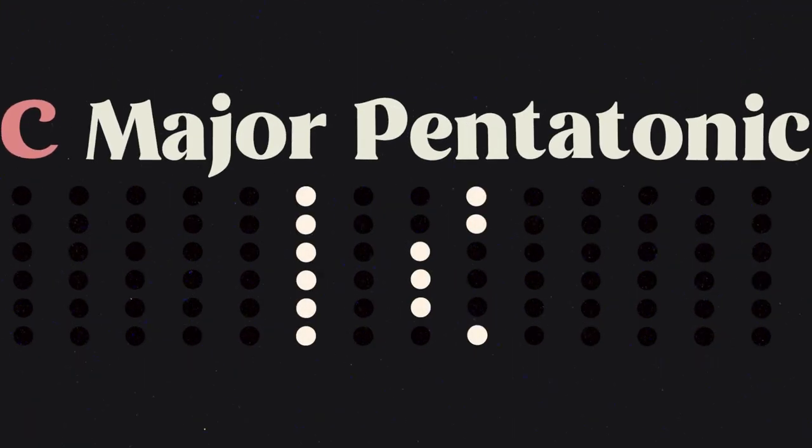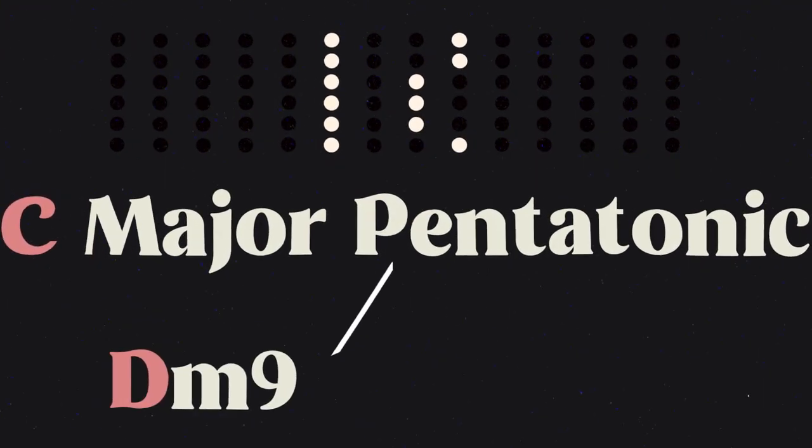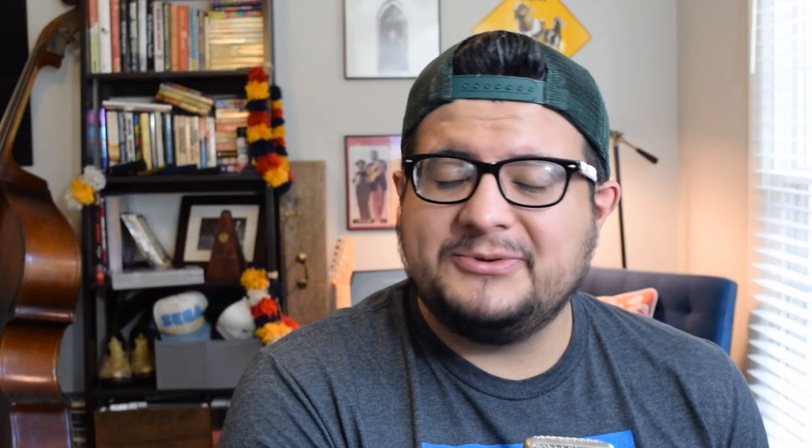Tony Rice is playing in a very pentatonic way in this break, but most of the time the scales he's using aren't really lining up with the chords happening in the rhythm part. In this tune, Tony uses a C major pentatonic scale over a D minor 9 chord and an F major 7 chord. Why would Tony do that?